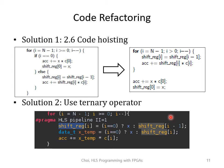Feel free to pause the video here and make sure that the baseline code and the refactored code are equivalent — they just have different coding styles. Keep in mind that future versions of Vitis may not need such code modification and may be able to achieve II of 1 by just adding the pipeline pragma to the baseline code.